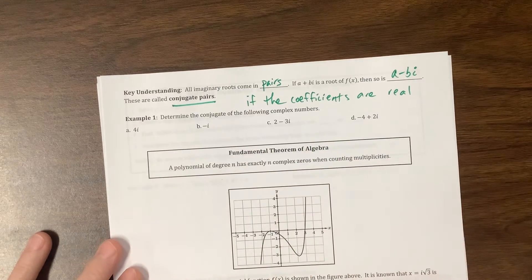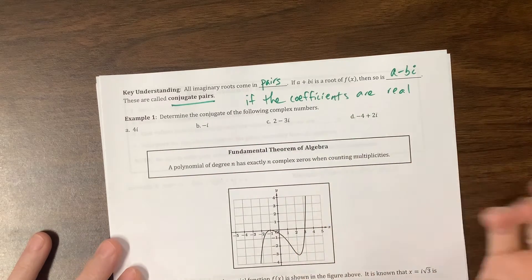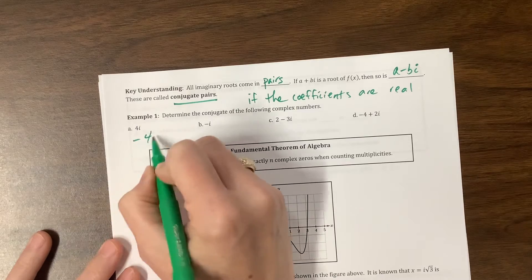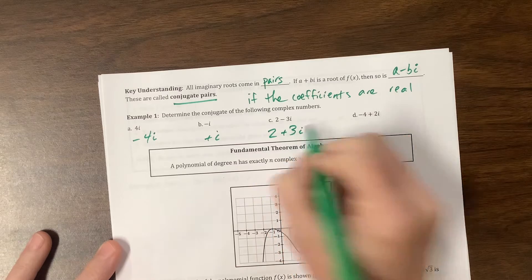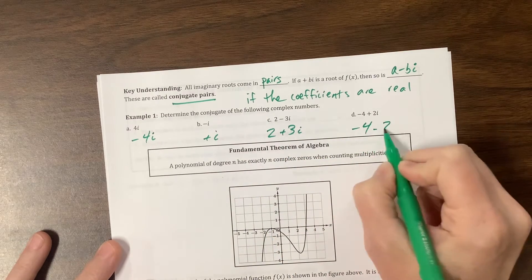If a plus bi is a root, then so is a minus bi, which is the conjugate. So they want us to find the conjugate of these. It changes the sign on the b part, on the non-real. So it's negative 4i. This is a positive i. This is 2 plus 3i. And this is negative 4 minus 2i.